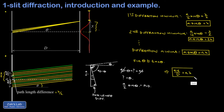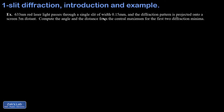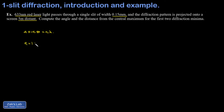Let's practice using the formula with a simple example. We have 633 nanometer red laser light passing through a single slit with a width of 0.15 millimeters, and the screen is five meters away — that's capital D. I want the angle and the distance from the central maximum for the first two diffraction minima — meaning the first and second minima on the same side of the central bulge. For part one, we use the formula in terms of angle. The first diffraction minimum occurs when n equals 1: plug in slit width in meters, n equals 1, and wavelength in meters (nanometers are 10 to the negative 9).